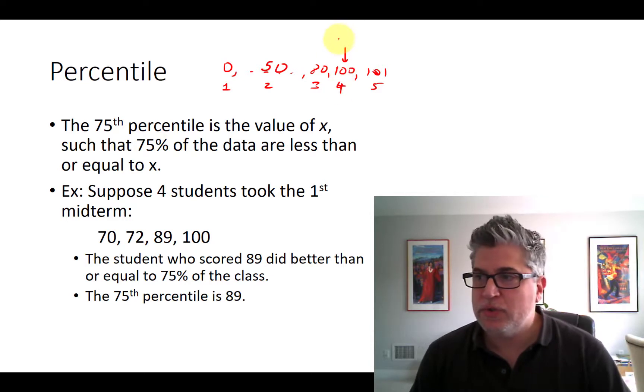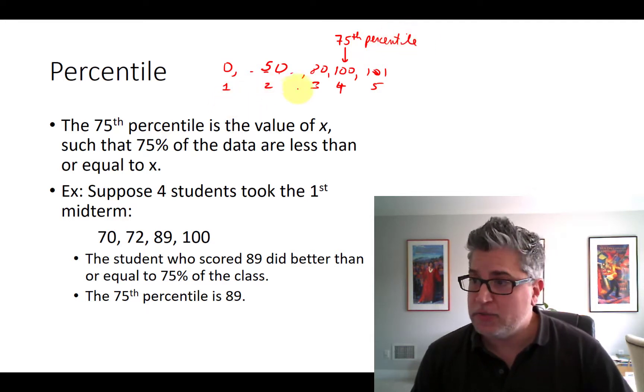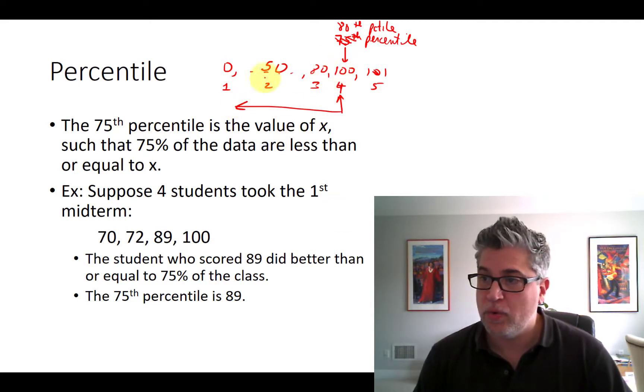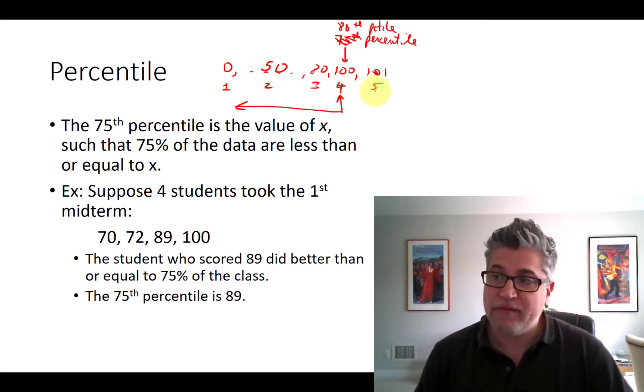If this is you, you scored in the 80th percentile, because four out of the five scored 100 or less. One, two, three, and you, you're included. It was four out of the five. So eight out of 10, 80th percentile.